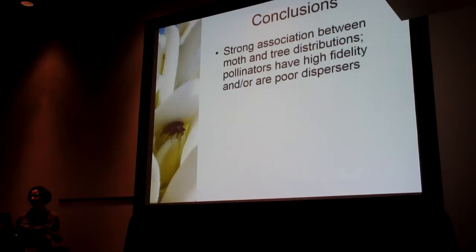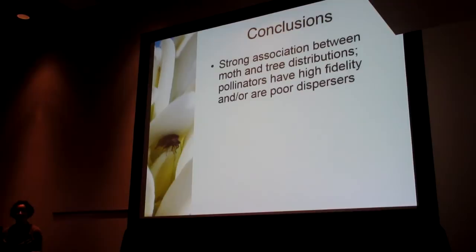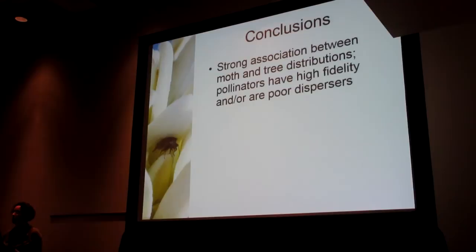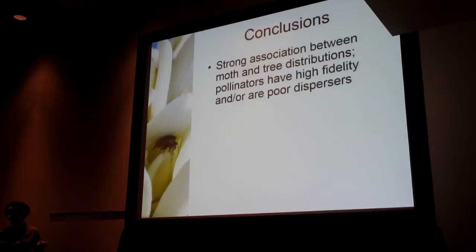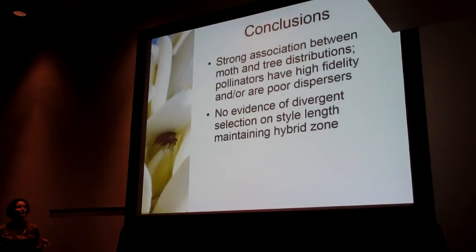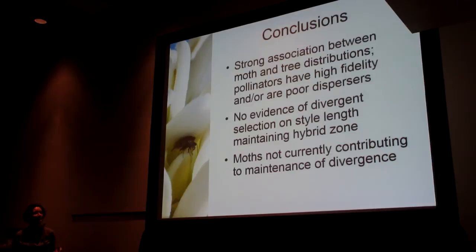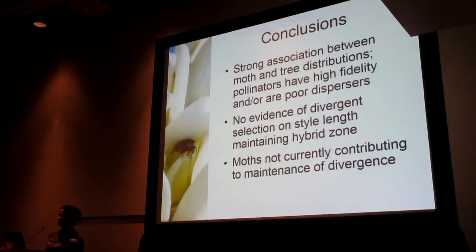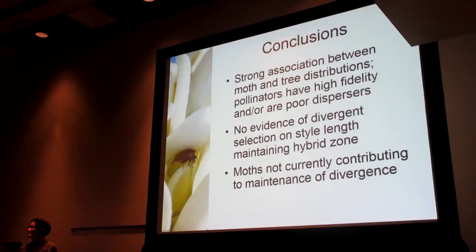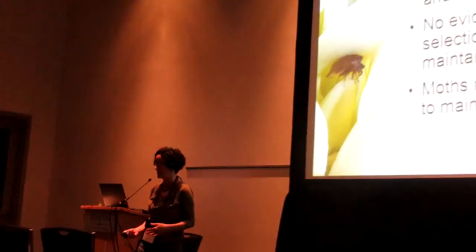In conclusion, we did find an impressively strong concordance between the distribution of the trees and the distribution of the moths — indicating that either the pollinators have very high host fidelity, or they perform poorly on non-host trees and are bad dispersers, and we have some reasons to think it's the latter. We don't find evidence for divergent selection on style length maintaining the hybrid zone. The final conclusion is that in this particular situation, the interspecific interaction does not appear to currently be what's maintaining divergence between these two species. This doesn't mean moths have never contributed to divergence — it's possible they played a role in the past.